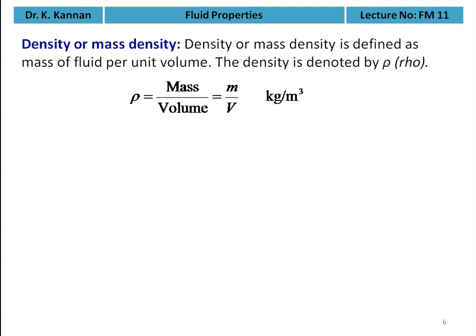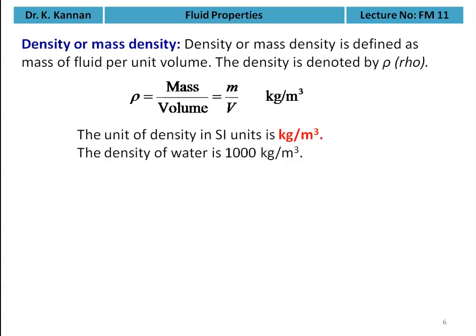Density or mass density of the fluid: density is defined as the mass of the fluid per unit volume, denoted by rho. So rho = m / V, with the unit kilogram per meter cube in SI units. The density of water is 1000 kg/m³ at atmospheric conditions.